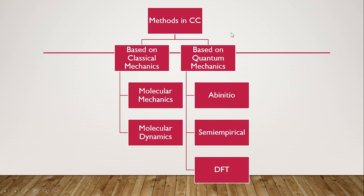Whereas if you are considering a small system — like studying the properties of a semiconductor or any system containing fewer than 100 atoms — you can rely on quantum mechanics, because it considers individual atomic properties and the system size is comparatively smaller.